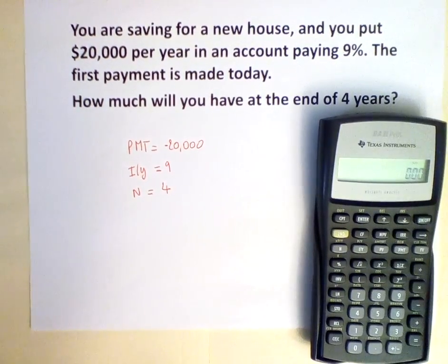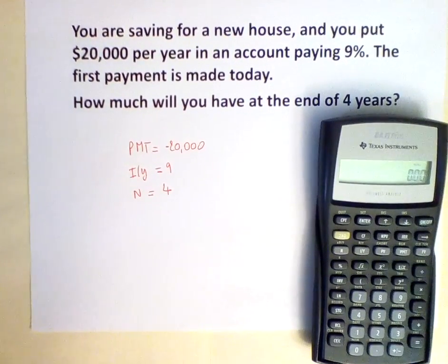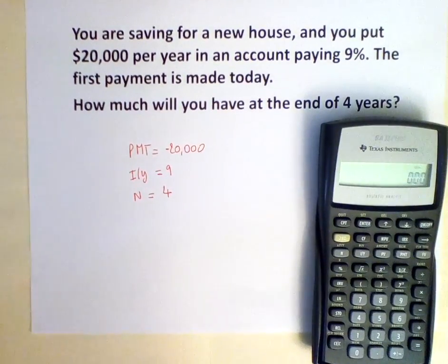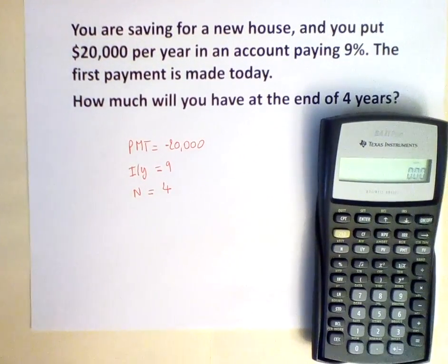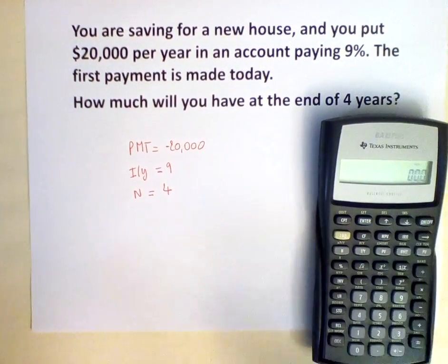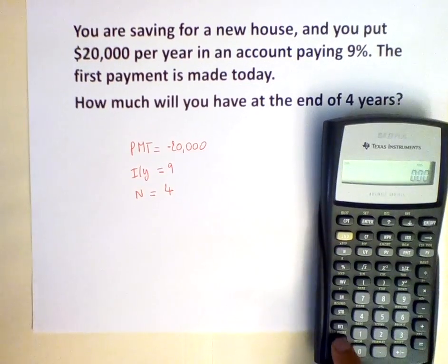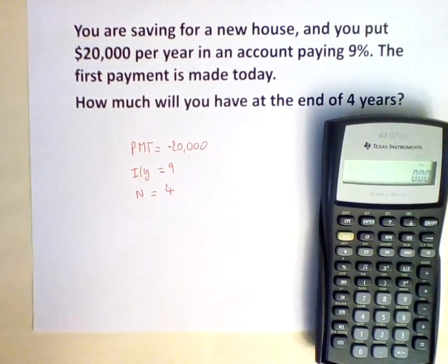Now that the calculator is ready, we will input the numbers. It's always a very good practice to clear all your work. Hit second, FV to clear the time value of money calculations you've done before. Then second, CEC to clear all your work.